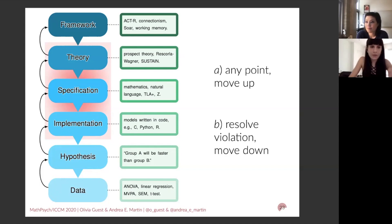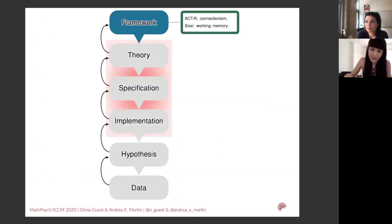The reason that theory, specification and implementation are in red is because we believe that these are quite often left out or at least under-discussed, in fact, by both modelers and non-modelers alike. So just to give examples for each step in the path, at the framework level, we have things like ACT-R and Soar, which are very formal cognitive architectures that give us very formal building blocks for them moving to build theories. There are also things like connectionism and working memory. So these very almost vague in some sense, high level concepts that someone can subscribe to in order to then go off and build a specific theory that relates to that framework.